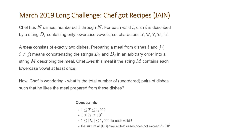Chef is wondering: what is the total number of unordered pairs of dishes such that he likes the meal prepared from these dishes? The constraints are: t, the number of test cases, will be between 1 and 1000; n, the number of dishes, is between 1 and 10 to the 5; the number of characters in each dish will be between 1 and 1000; and the sum of all di over all test cases won't exceed 3 times 10 to the 7th.